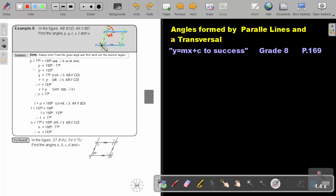Then angle R. R is equal to P. What will that be? Alternate angles. Okay. They are equal. So R will be 103.